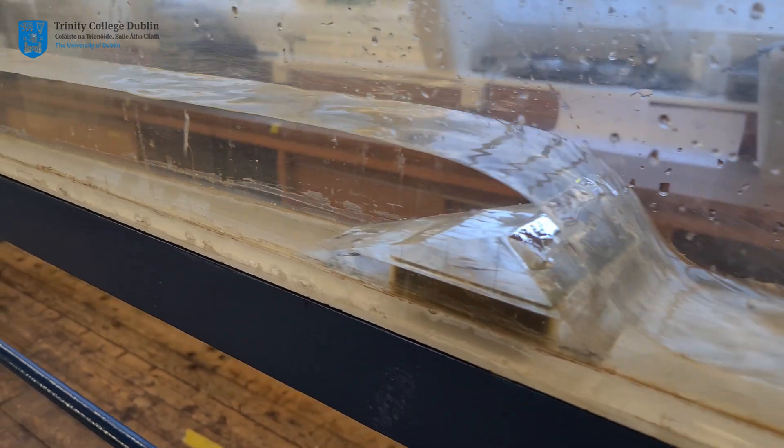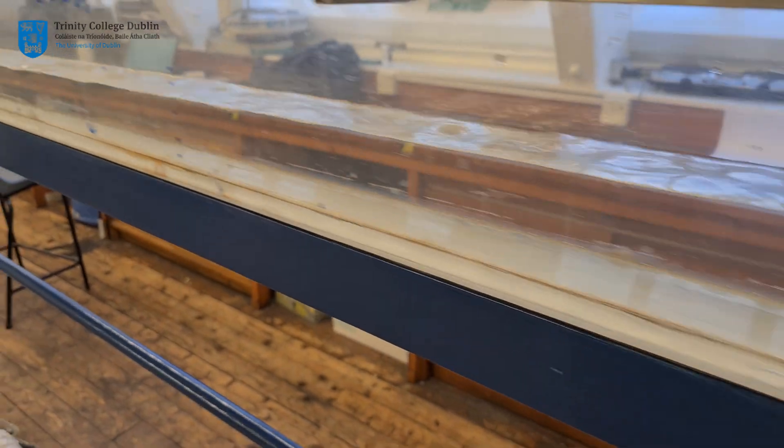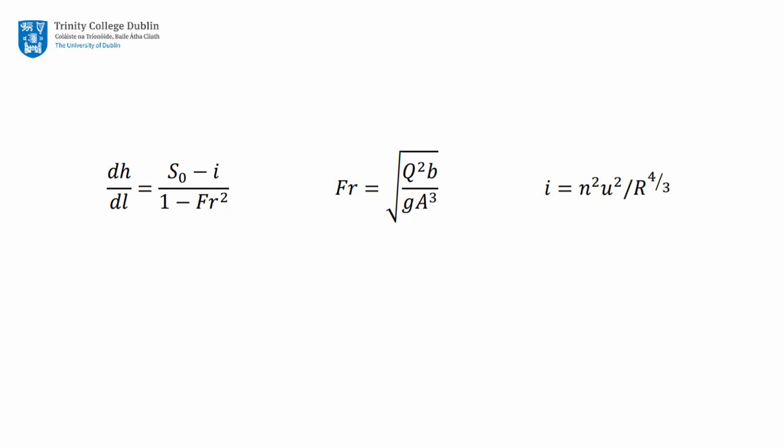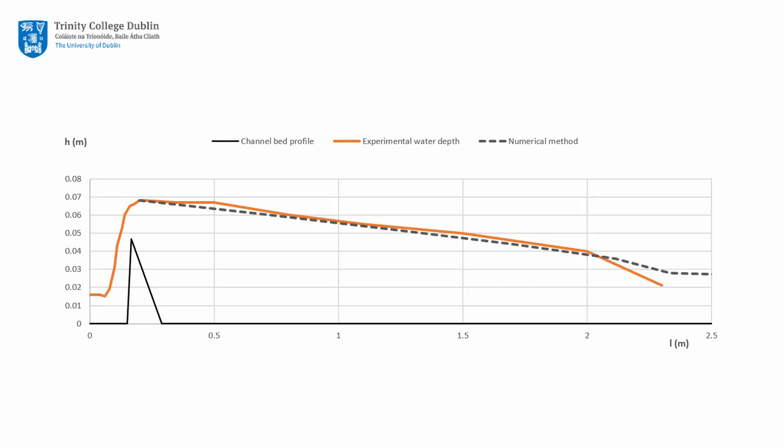The experimentally measured backwater curve can then be compared to the theoretical profile as given by the following three equations. Please create an Excel spreadsheet with these formulae to iteratively calculate the theoretical backwater curve. Please comment on the correlation of the two backwater curves. Was there any discrepancy between the predicted and observed curves? If so, please suggest any reasons for this.